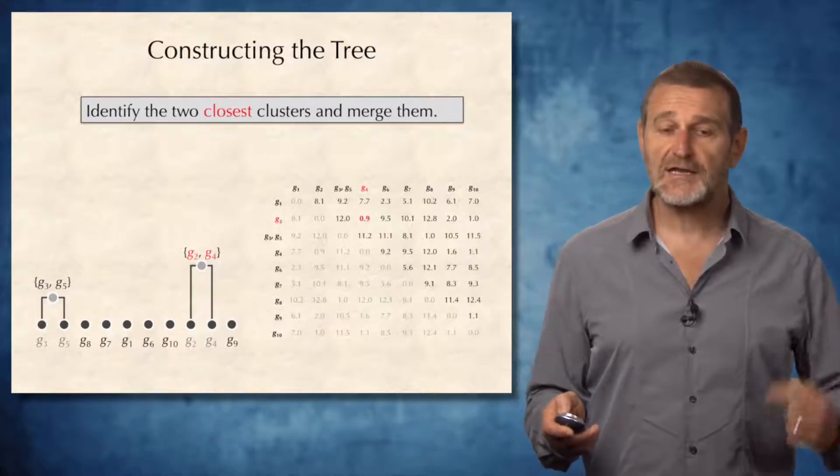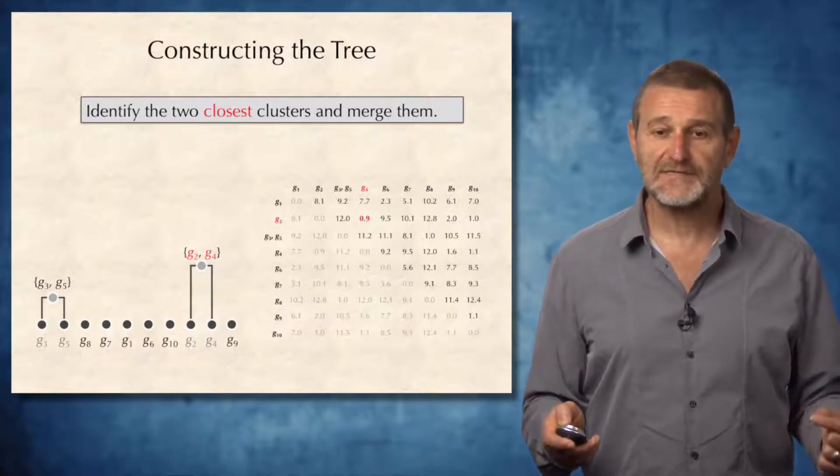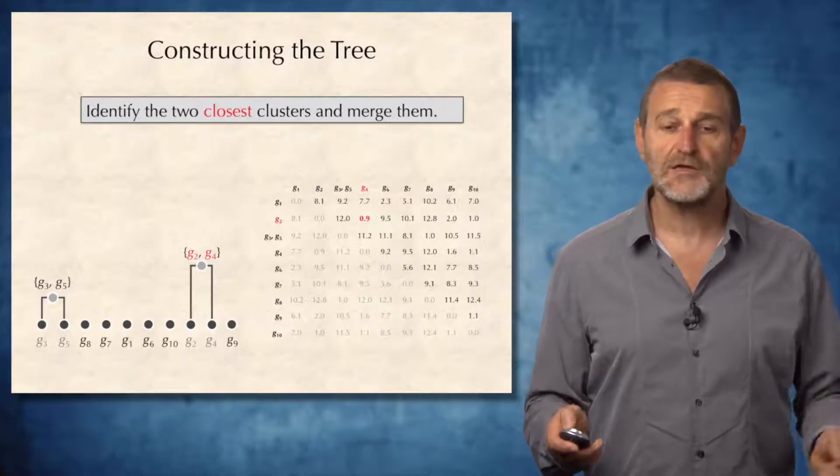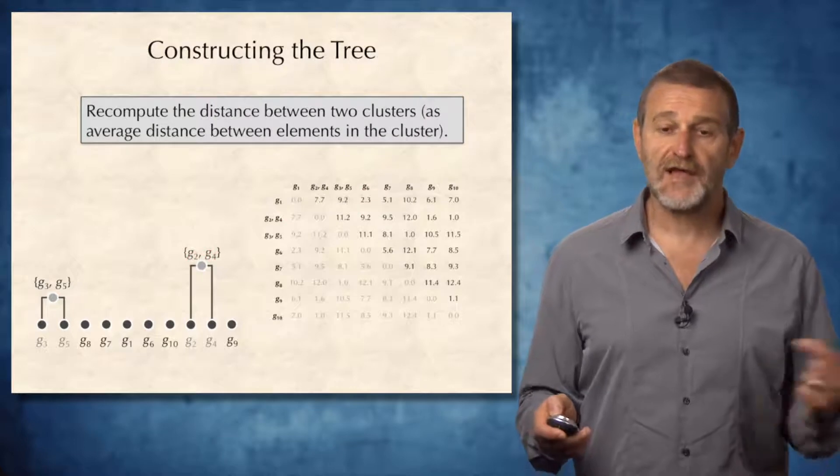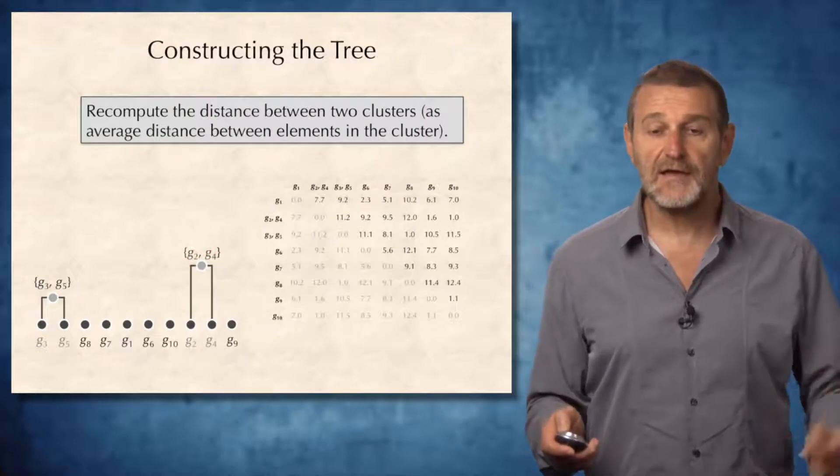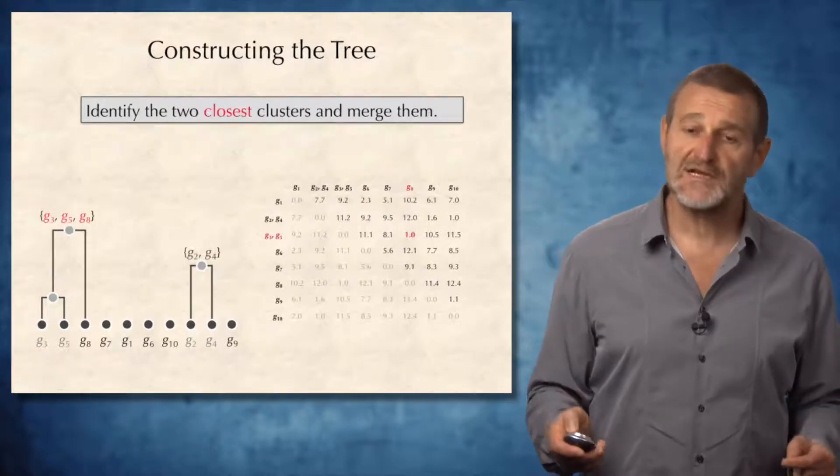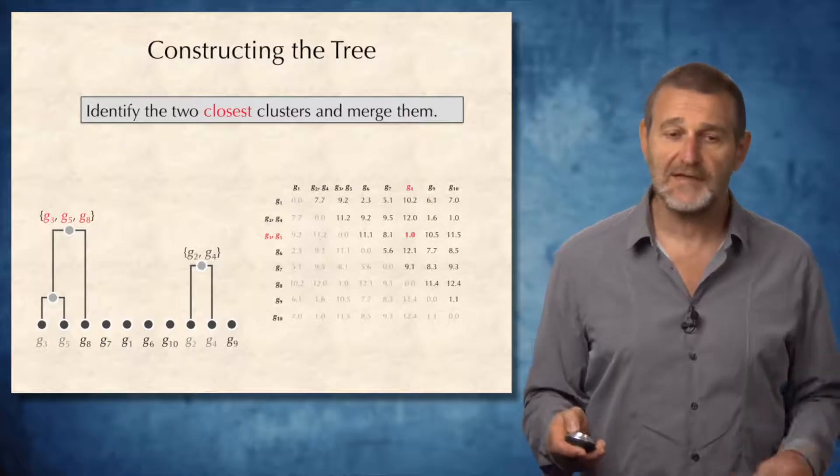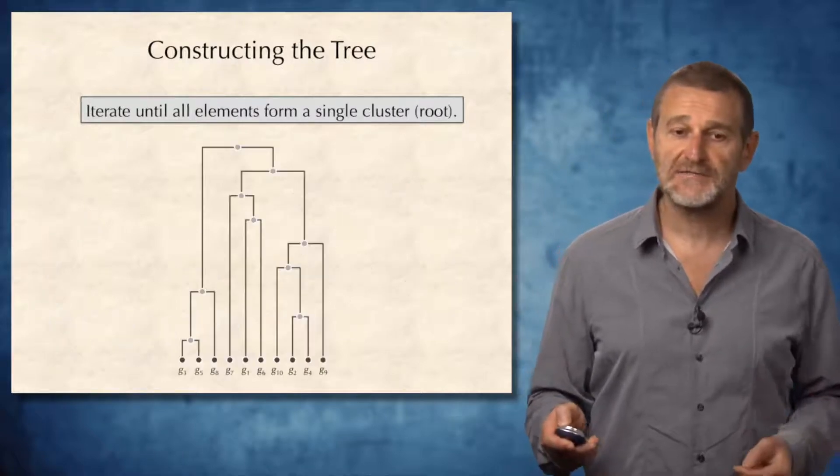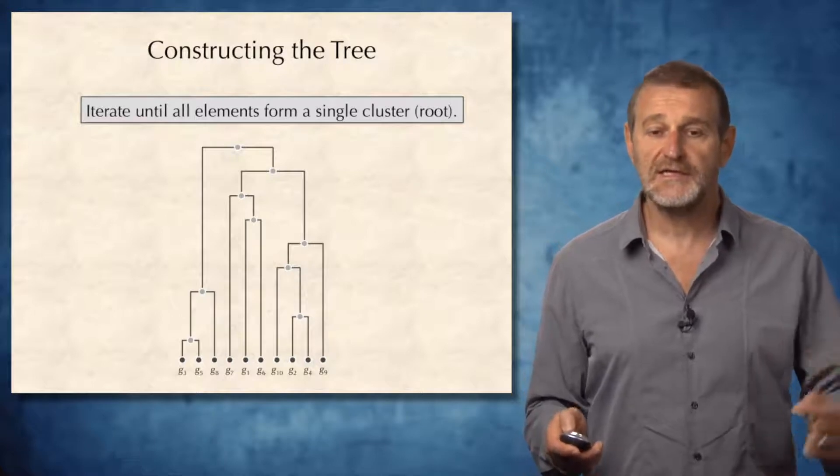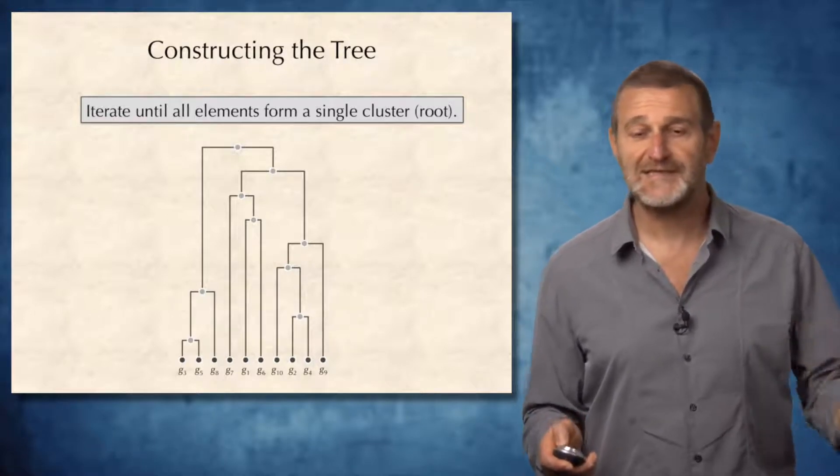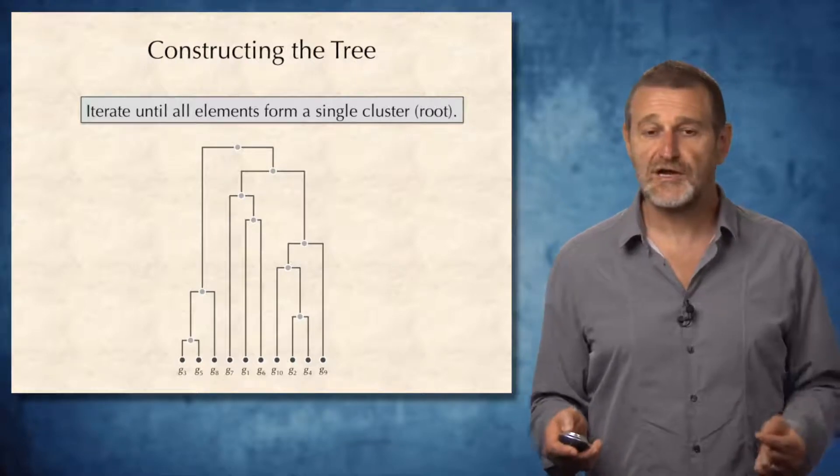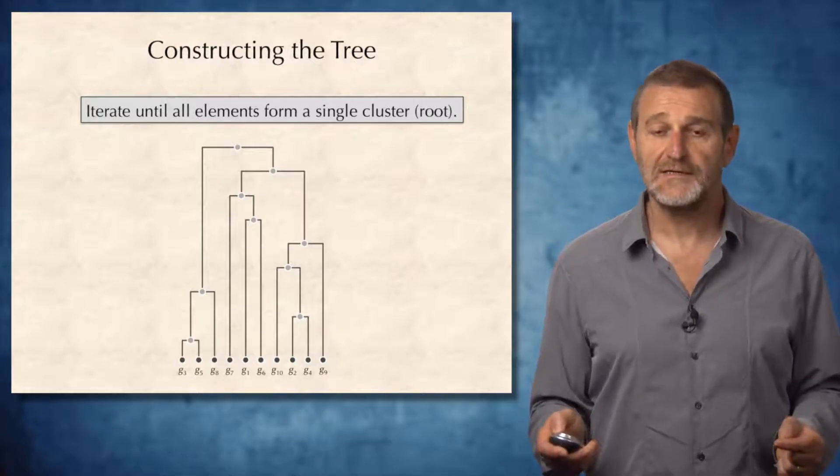Once again, it collapses the leaves two and four into a single node in the tree and recomputes the matrix again. And in the newly constructed matrix, it once again finds the smallest element and continues in this way until the whole tree is constructed. In other words, when there is only a single cluster which corresponds to the root of the tree left.